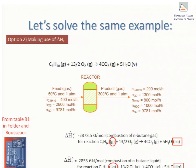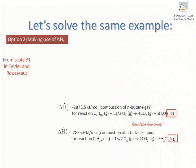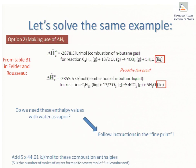It's therefore of utmost importance to read the fine print under reference tables because it's precisely here where it's stipulated that if the water in the outlet is to be in the vapor phase then it will be necessary to add to the combustion enthalpies 44.01 kilojoules per mole multiplied by the number of moles of water formed for every mole of fuel combusted.